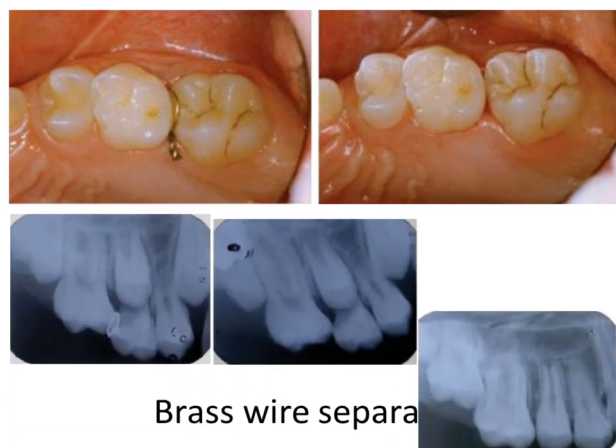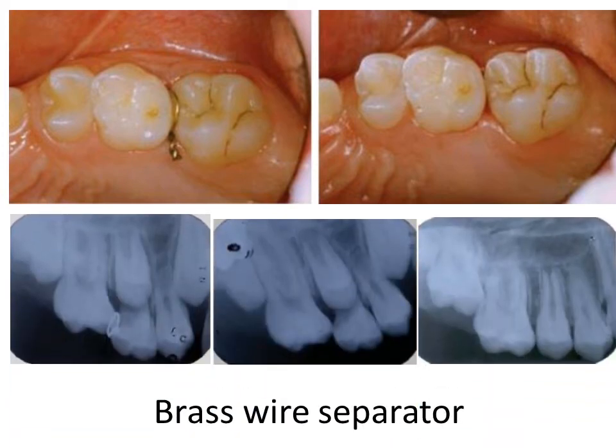This series of radiographs shows improvement in the position of the sixth and finally the eruption of the second premolar following the use of the brass wire separator.